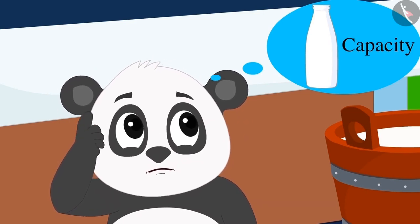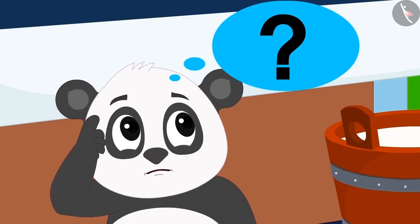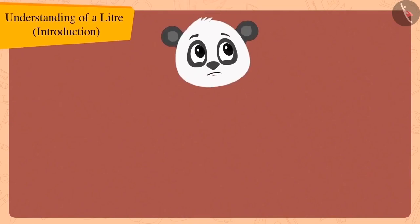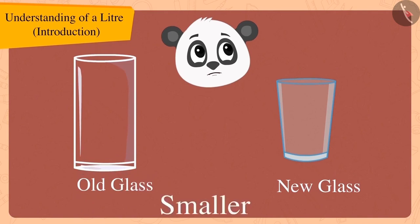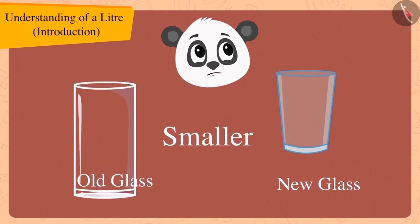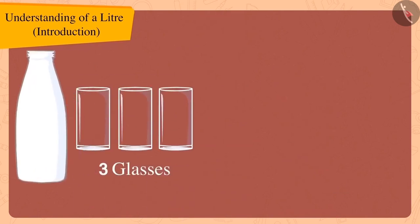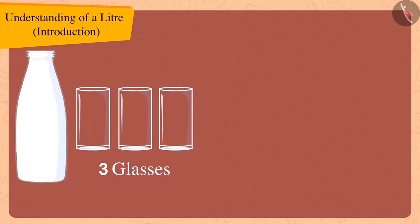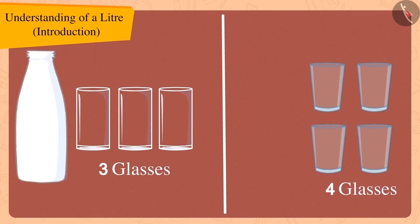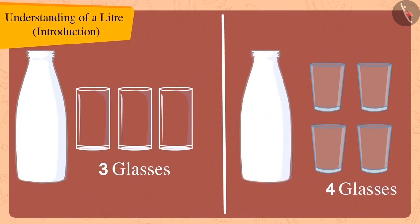Children, do you know why this happened? This happened because Golu's new glass is smaller than his old one. That's why earlier only three glasses of milk were needed to fill Shaykh Khan's bottle, but today with Golu's new glass, his bottle was filled with four glasses.